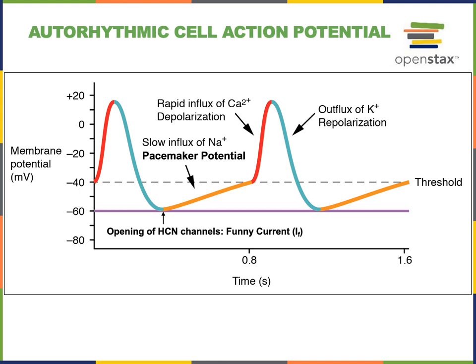Moving on to the red line on the graph: as the membrane potential reaches a threshold of negative 40 millivolts, voltage-gated calcium channels are triggered to open, causing a rapid influx of calcium during the rising phase of the action potential. Then, as the voltage-gated calcium channels close, voltage-gated potassium channels open, causing repolarization during the falling phase.